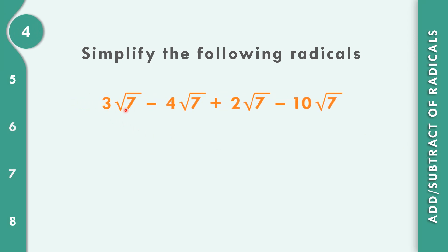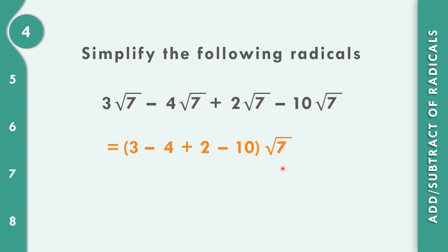In number 4, 3 square root of 7 minus 4 square root of 7 plus 2 square root of 7 minus 10 square root of 7. All have the same index and same radical, so we write the quantity 3 minus 4 plus 2 minus 10, times square root of 7. 3 minus 4 is negative 1, plus 2 is 1, minus 10 equals negative 9. The answer is negative 9 square root of 7.